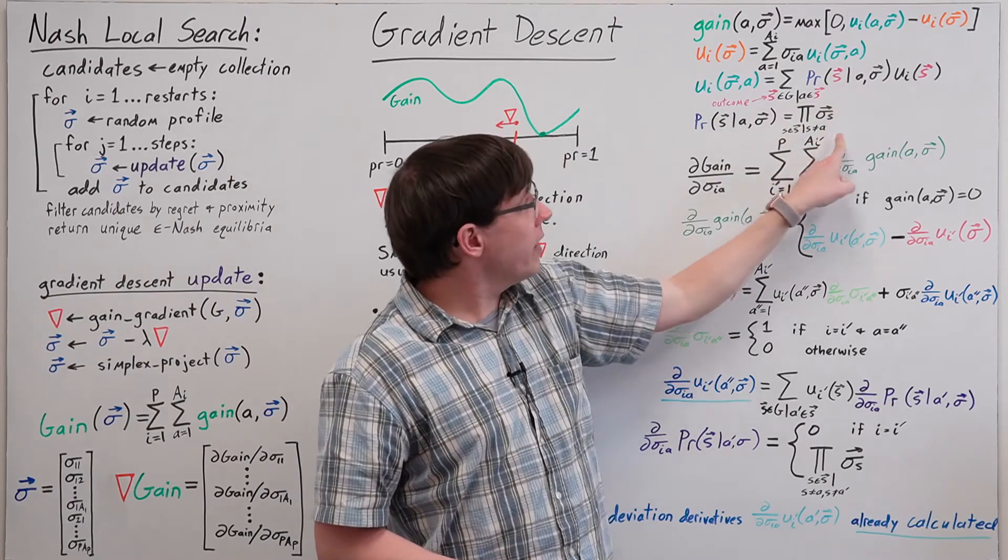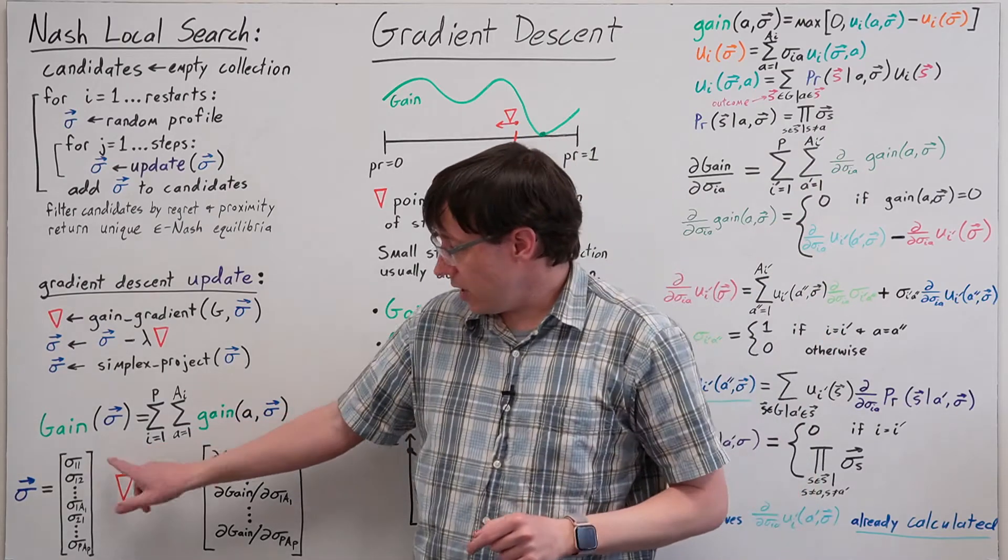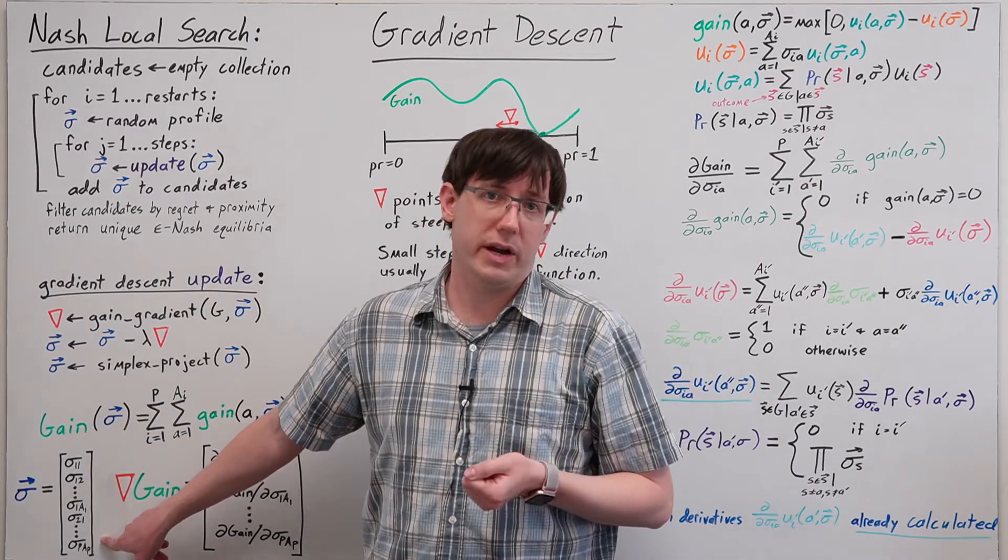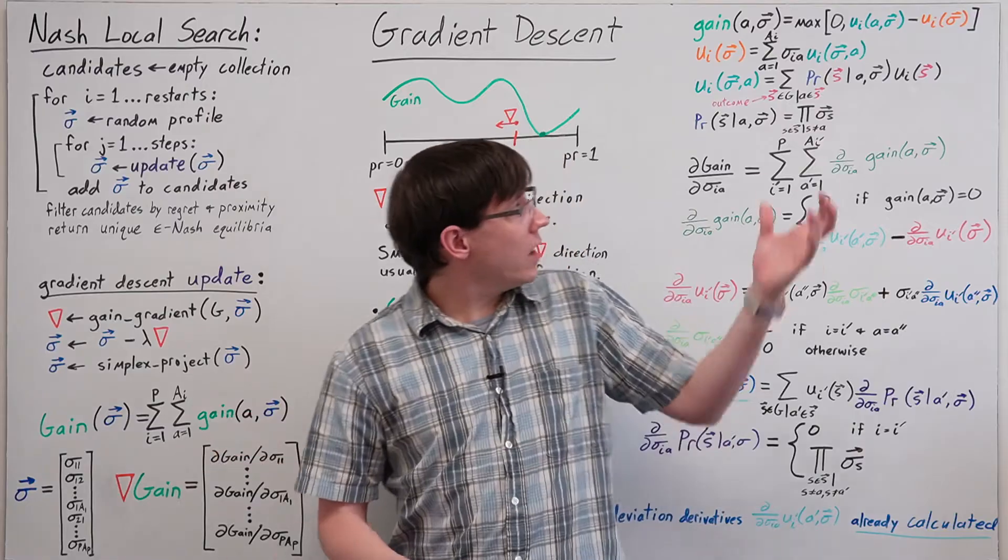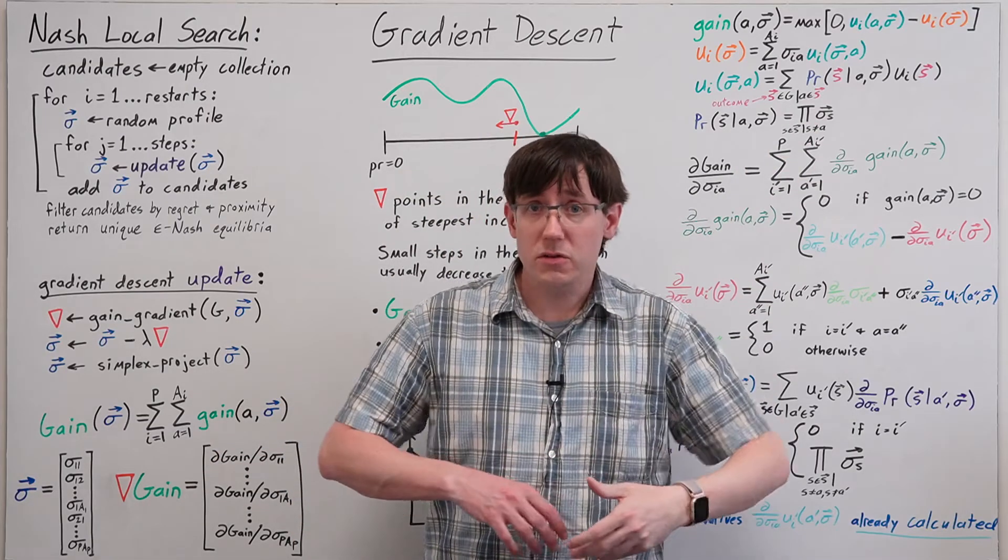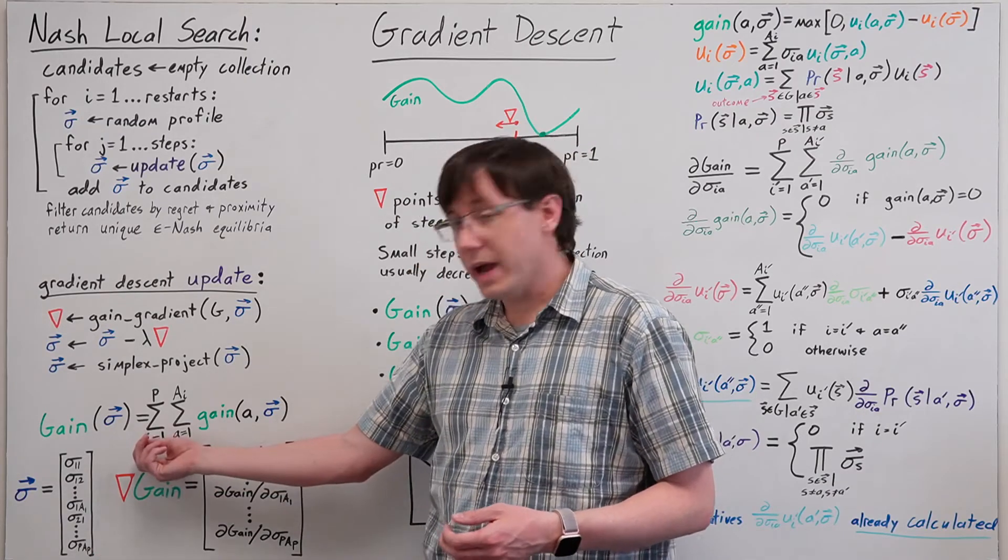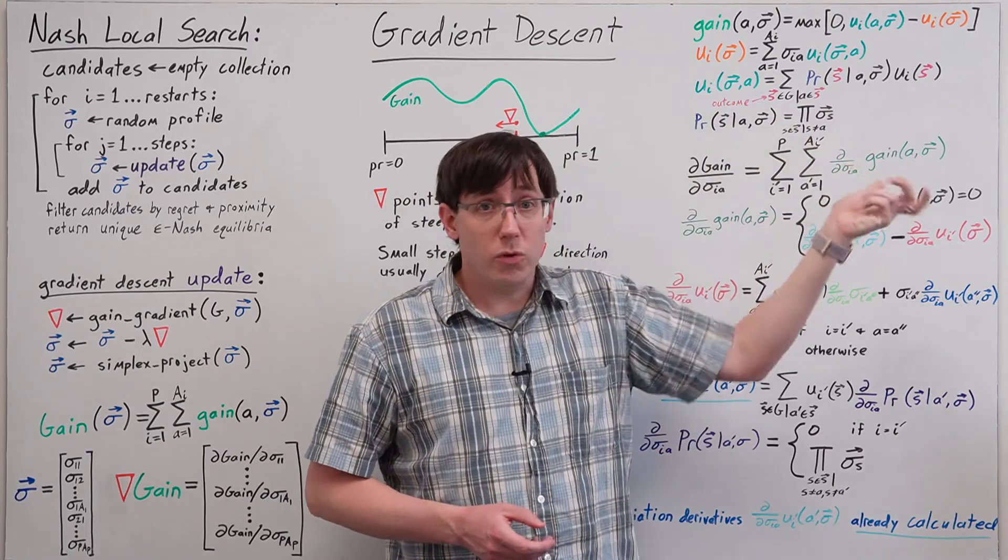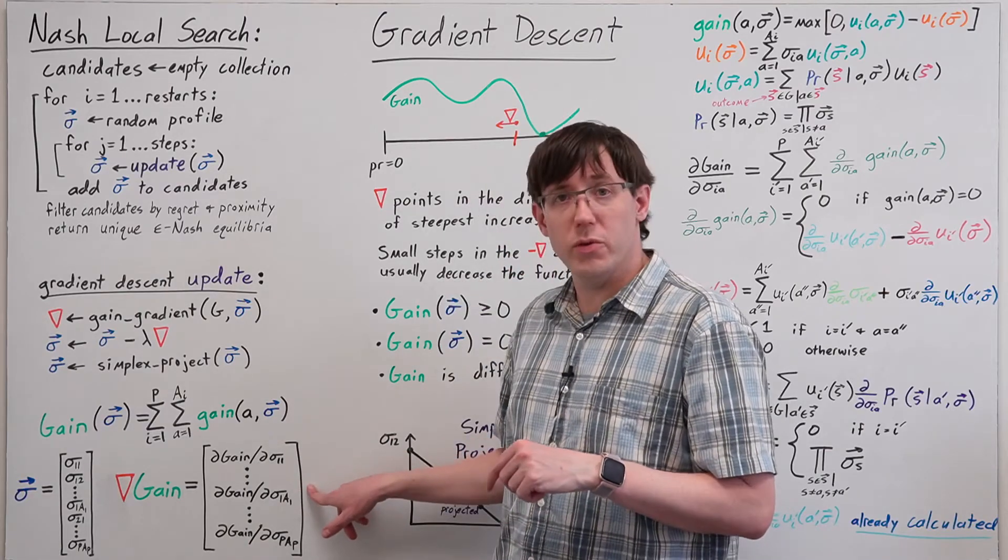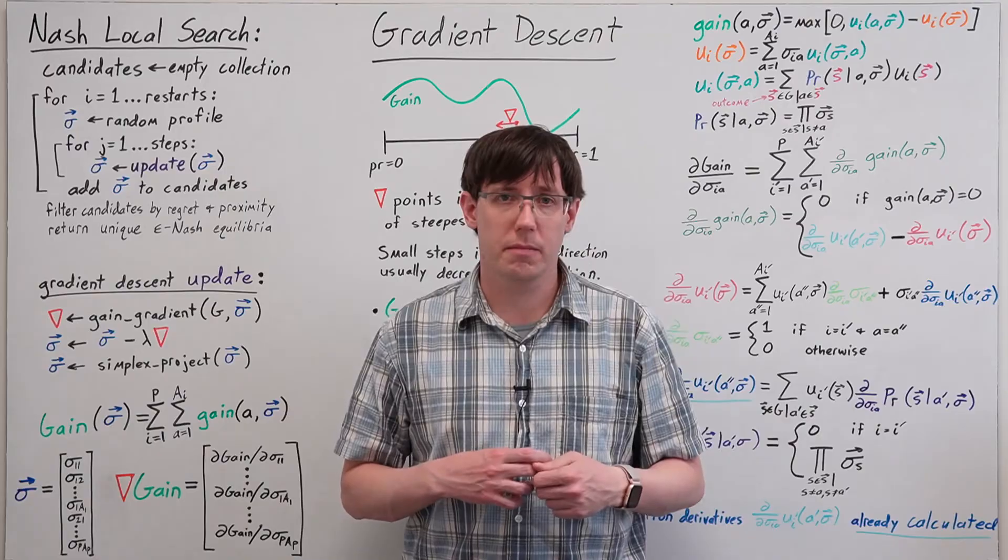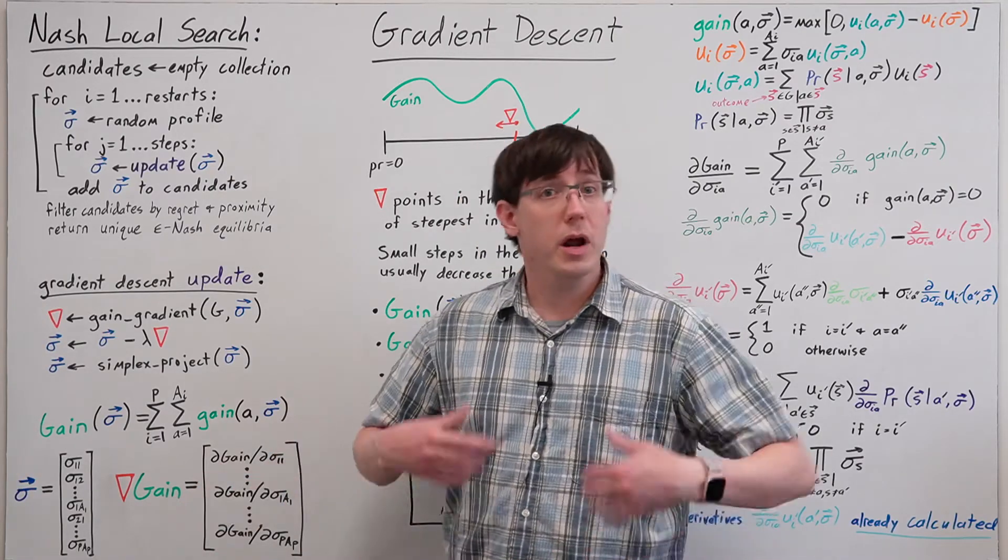Those probabilities are a product over the probabilities from the mixed strategy that were the elements of our input vector. Because the total gain is calculated by sums and products of constants and the variables making up our input vector, it's entirely possible to work out how to carry these derivatives through all of those calculations and come up with an explicit formula to compute these partial derivatives at any given profile. Once we calculate the partial derivatives, we can assemble them into the gradient vector and perform gradient descent.